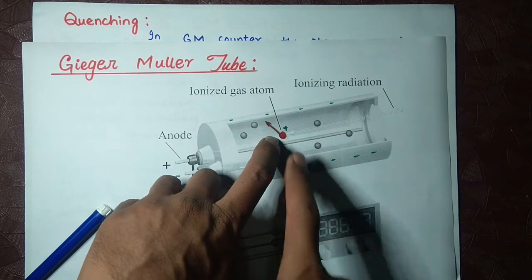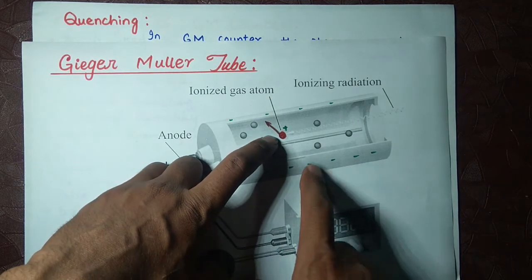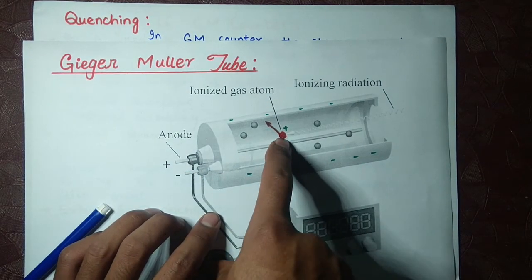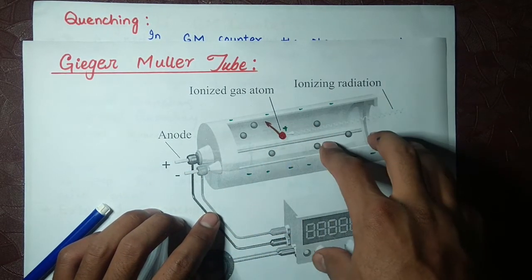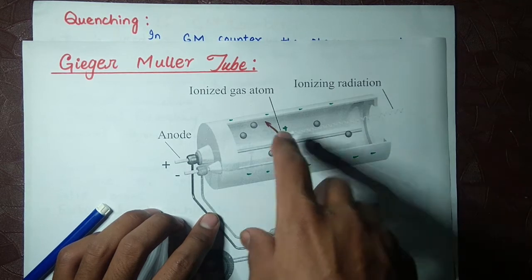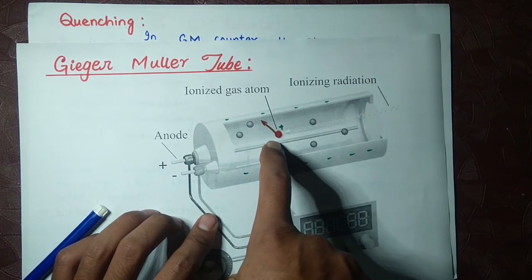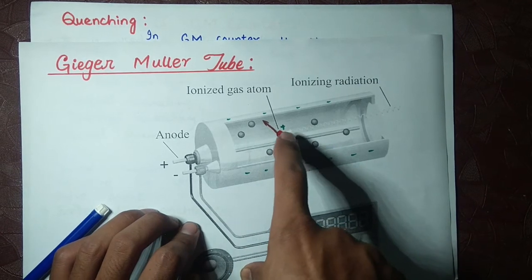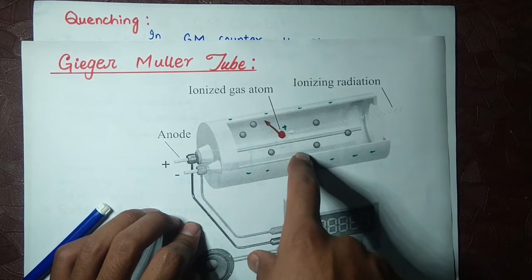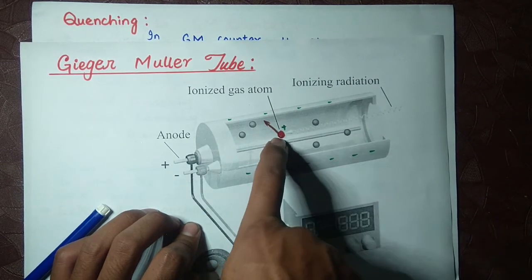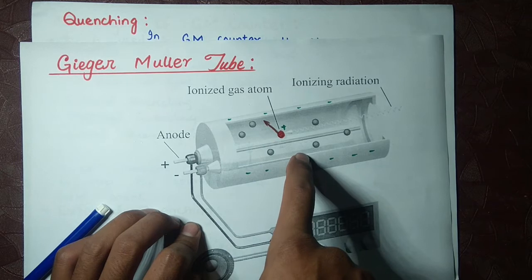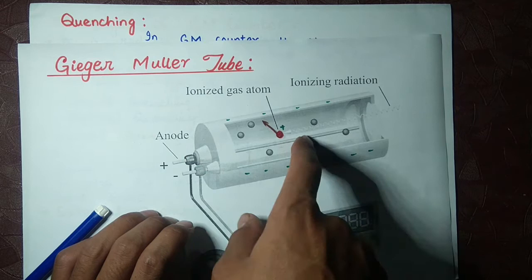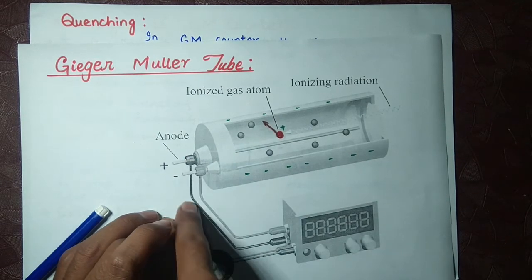The ion requires only one electron, but the other electrons which are not required by this atom or ion go to the anode. These electrons which are not required by the atoms are called false electrons.